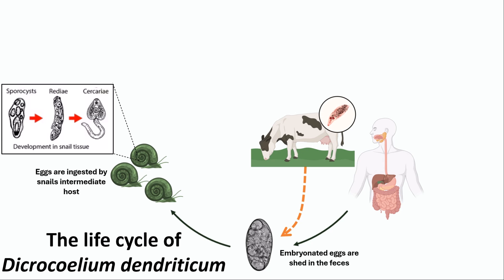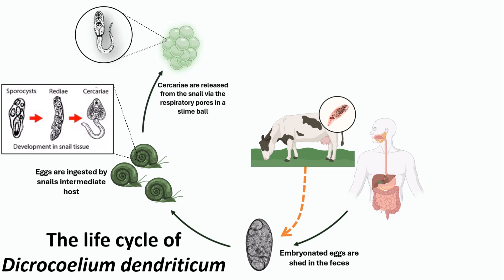Then the sporocysts migrate to the digestive gland, where they give rise to several daughter sporocysts. Inside each daughter sporocyst, cercariae are produced. After that, cercariae migrate to the respiration chamber, where they are shed in a slime ball from the snail.